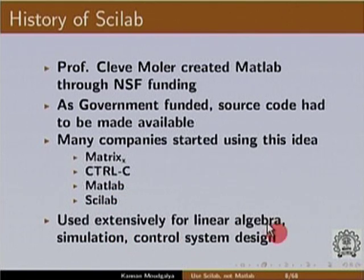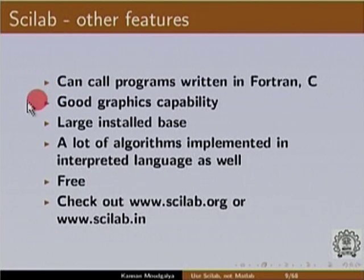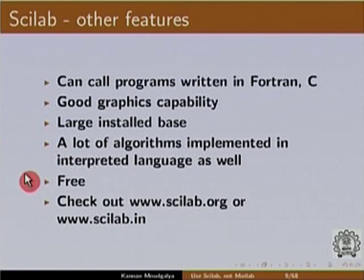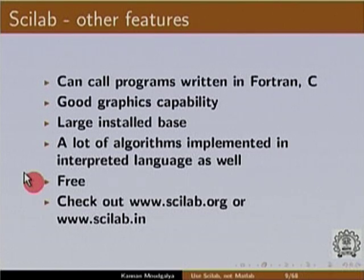Scilab is used extensively for linear algebra, simulation, control system design, and so on. Scilab can call programs written in Fortran and C. It has good graphics capability, a large installed base — about 1 million downloads per year — and a lot of algorithms implemented in its interpreter language. It is free and open source; you can develop your own algorithms, your own executables, and launch hardware devices with executables.